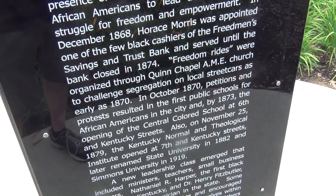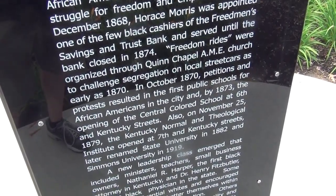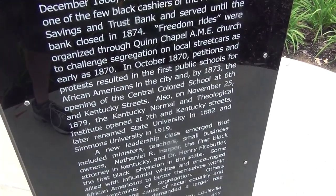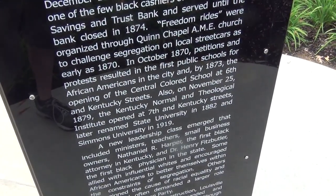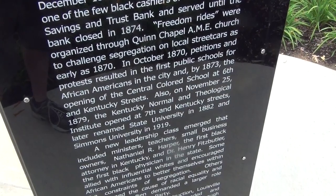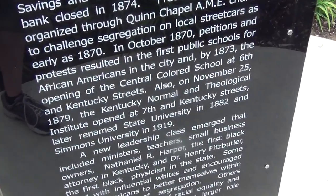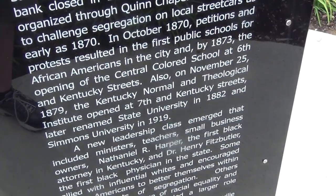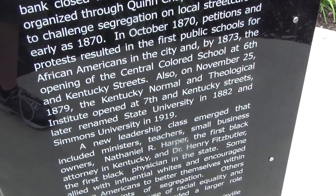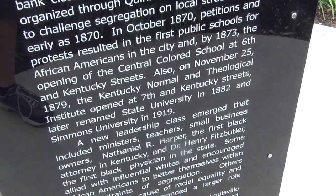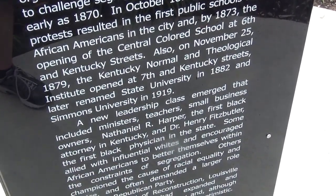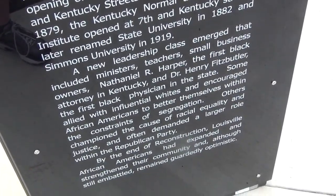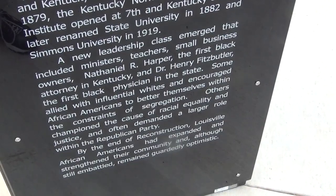Freedom Rides were organized through Quinn Chapel AME Church to challenge segregation on local streetcars. As early as October 1870, petitions and protests resulted in the first public schools for African Americans in the city, and by 1873, the opening of the Central Colored School at 6th and Kentucky Streets. On November 25th, 1879, the Kentucky Normal School and Theological Institute opened at 7th and Kentucky Streets, later renamed State University in 1882 and Simmons University in 1919.